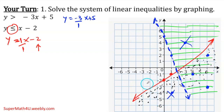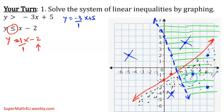Any point like negative 5 comma 2, for example — not a solution. It has to be in the intersection of the two shades.